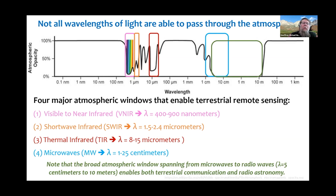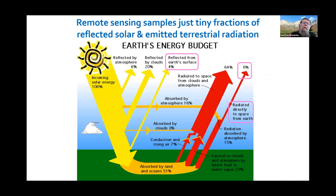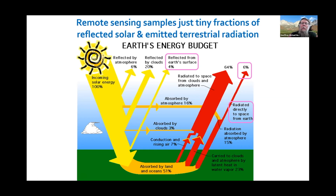What we sample from space is just a tiny fraction of the reflected solar and emitted radiation budget. Only about four percent of the incident solar radiation is going back into space where we can observe it, and about six percent of earth's emitted radiation can be sensed from space as well.